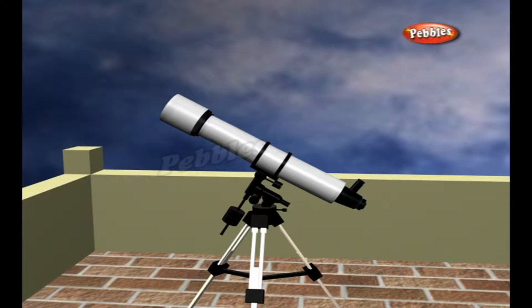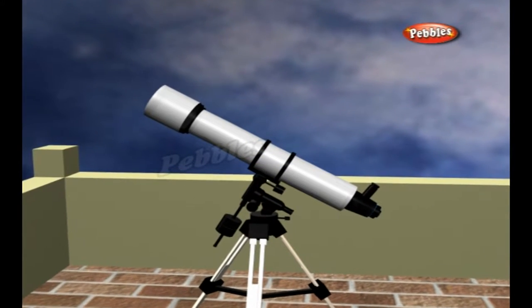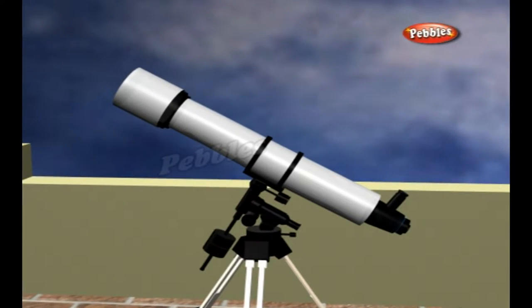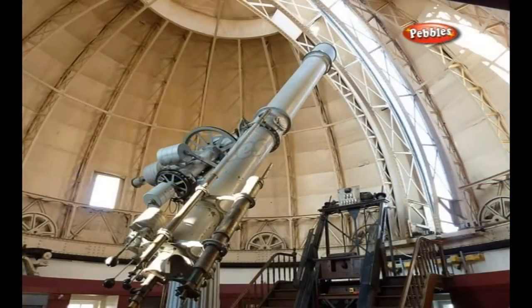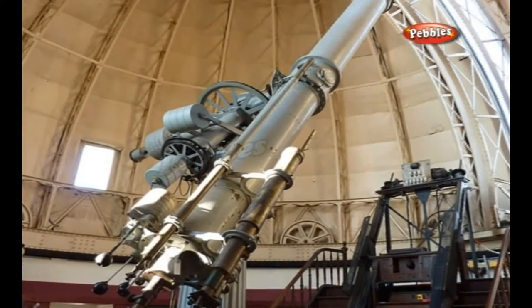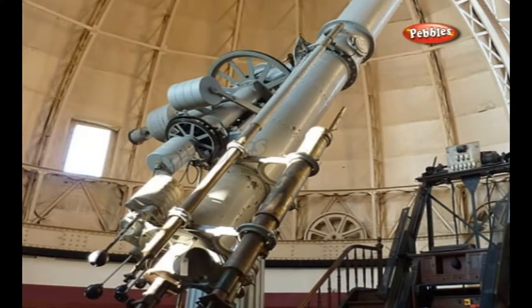A telescope is an instrument designed for the observation of remote objects by the collection of electromagnetic radiation. The earliest evidence of working telescopes were the refracting telescopes that appeared in the Netherlands in 1608.